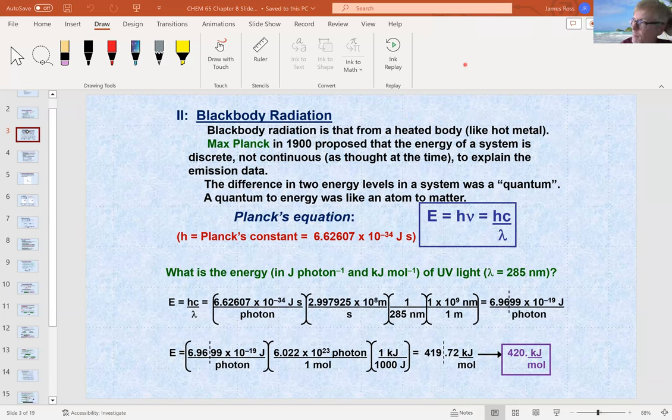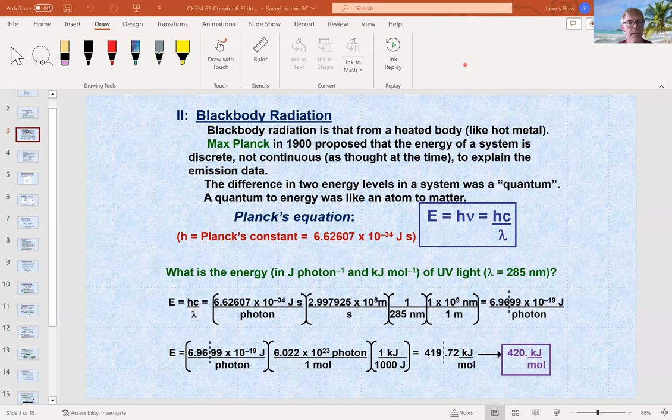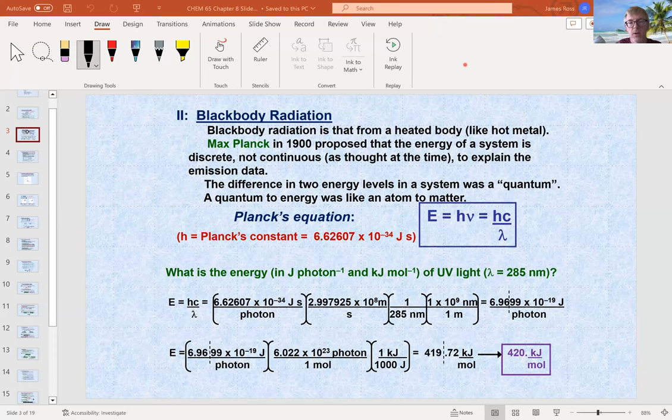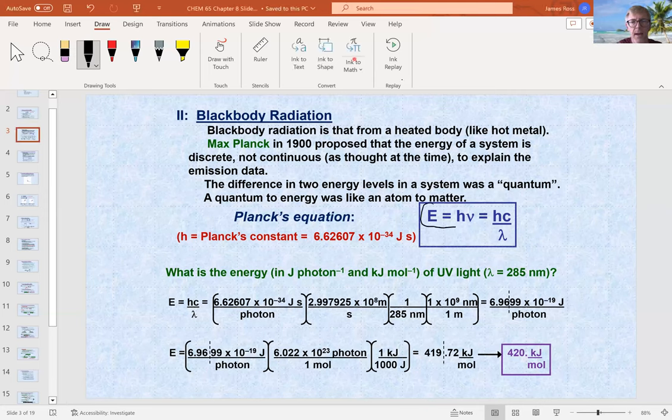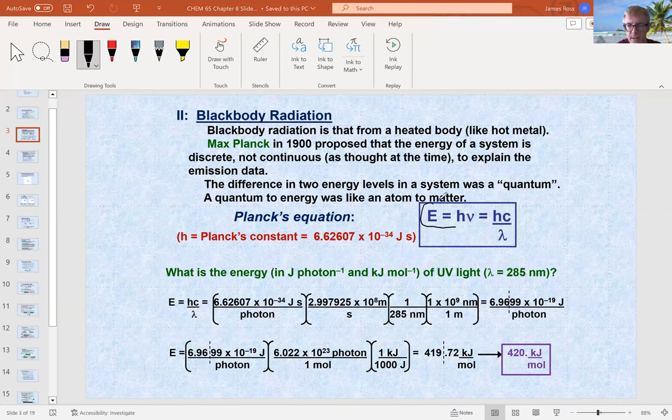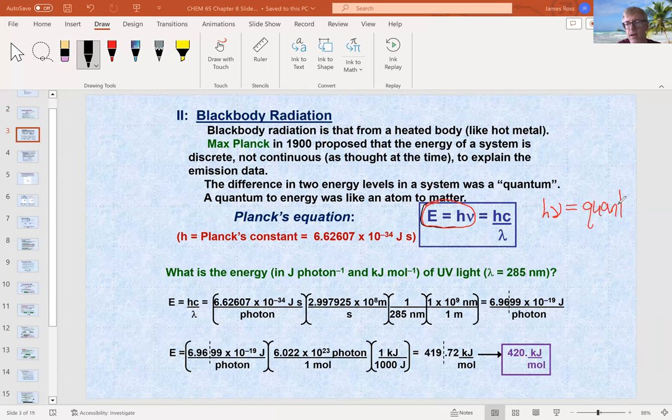So black body radiation. A black body is any object that can emit and absorb energy perfectly. You can think of a hot piece of metal glowing. You know, if you put a hot piece of metal in a furnace and it glows red hot, you can think of that as a black body. So Planck quantized energy. So he said that energy comes in pieces called quanta.